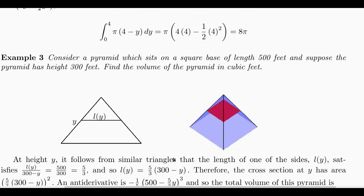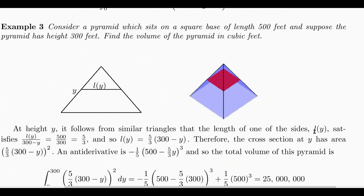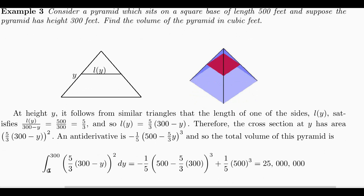Here's a pyramid. It sits on a square base of length 500 feet, and the pyramid has height 300 feet. From similar triangles the length of one of the sides, L of Y, satisfies the ratio 5 to 3 — where 500 and 300 reduce to 5 and 3 once the hundreds cancel. So L of Y equals 5 thirds times Y, and the area of the slice at height Y is that quantity squared. We then integrate from 0 to 300 of that squared to get the answer.